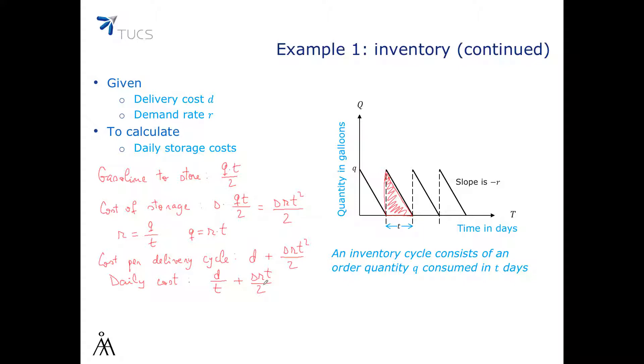And so we finally get to the real question. How often should we order so that we minimize the daily cost? This can be formulated as minimize F(T), which is D over T plus SRT over 2.